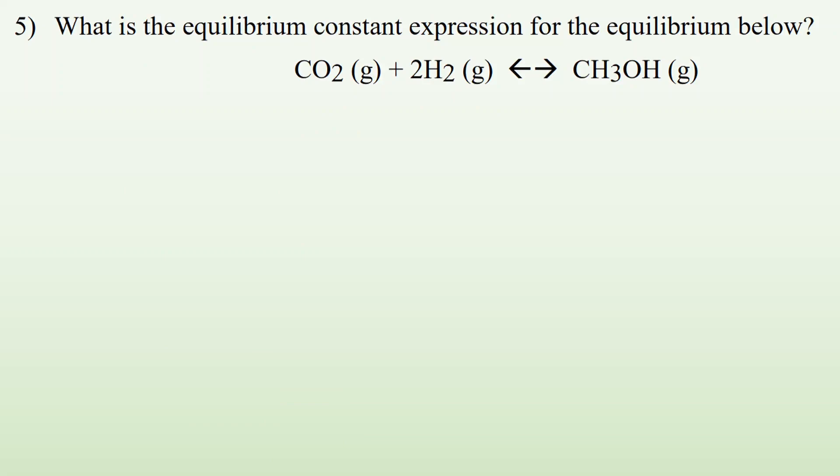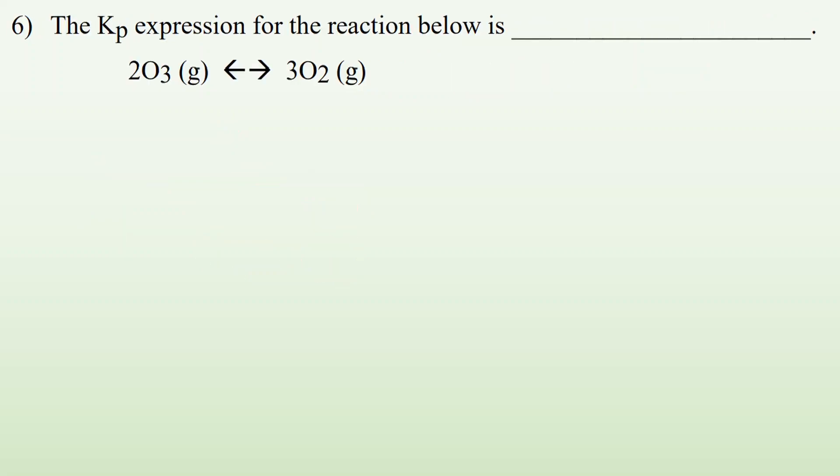Five, what is the equilibrium constant expression for the equilibrium below? So again, I got all gases, so I could use the Kp. So the pressure of the product, the product being the CH3OH, to whatever its coefficient is. So there's a 1 there, divided by the pressure of the reactants. So one of them is CO2, coefficient of 1, times the pressure of H2, which is going to get squared. I usually put parentheses around things that have an exponent with pressures, because it gets a little confusing what that number is doing there. And with the parentheses, all of this is getting squared.